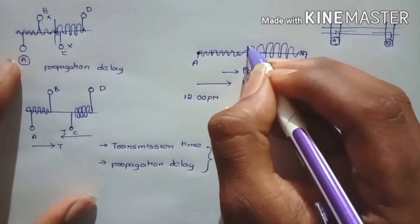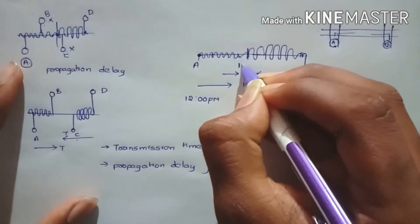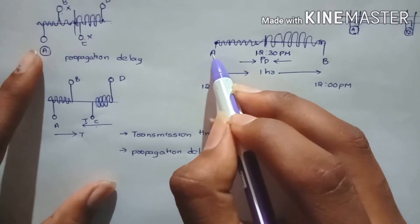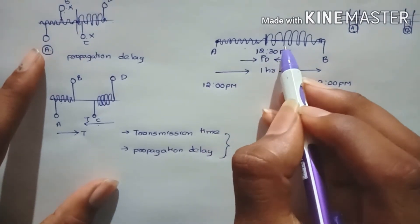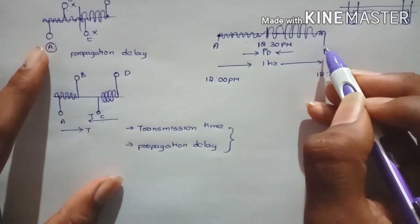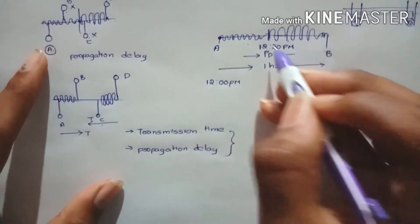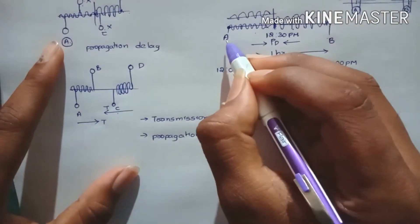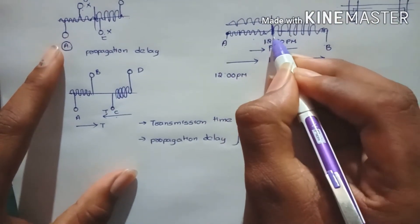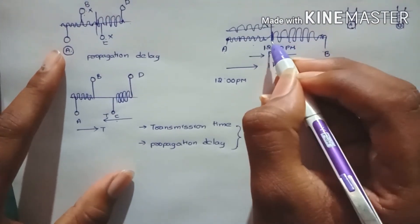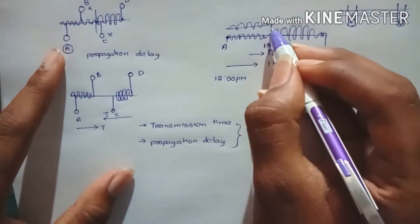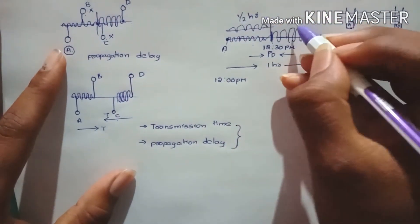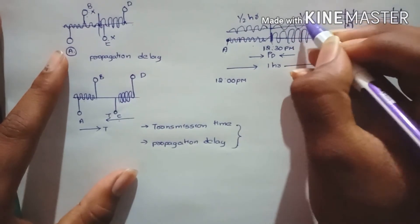Let us assume the collision happens exactly at the midpoint. The time at that point is 12:30 pm. After half an hour of transmitting from A, A's data collides with B's data. Similarly, B's data collides with A's data after half an hour. The collided signal then needs half an hour to travel back to A, and half an hour to travel back to B.